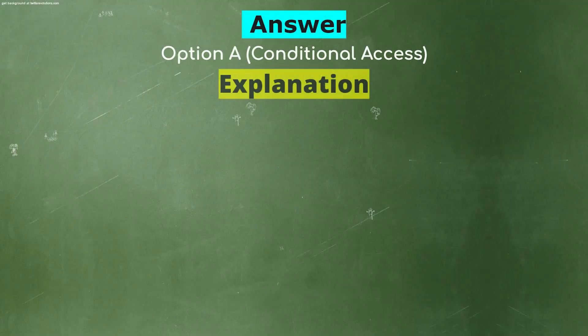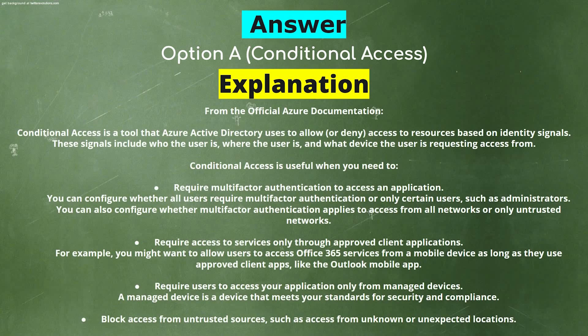Explanation: Conditional Access is a tool that Azure Active Directory uses to allow or deny access to resources based on identity signals. These signals include who the user is, where the user is, and what device the user is requesting access from.